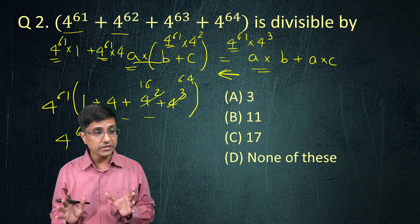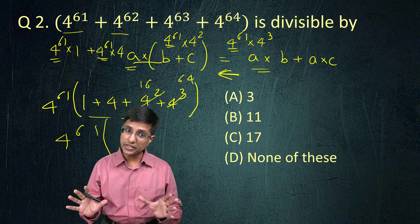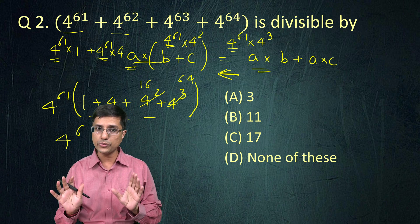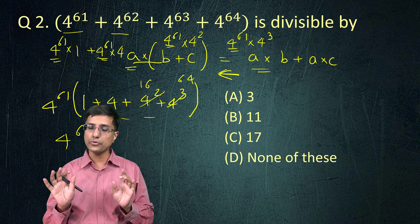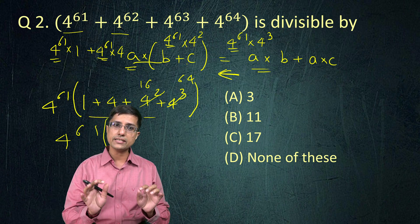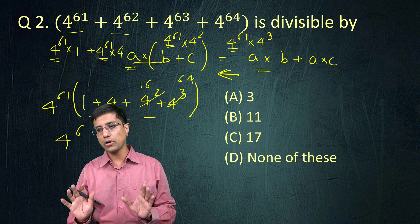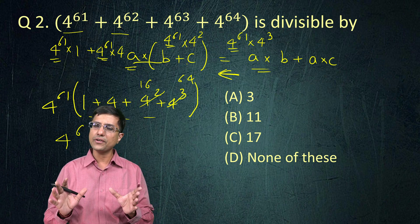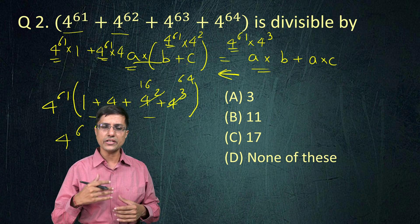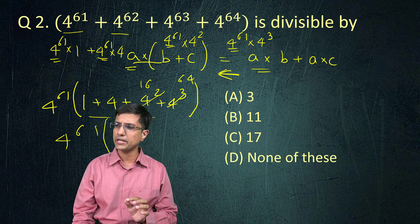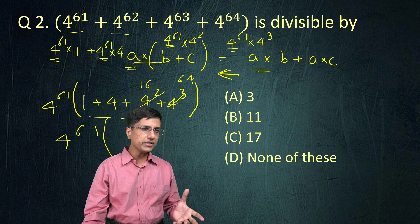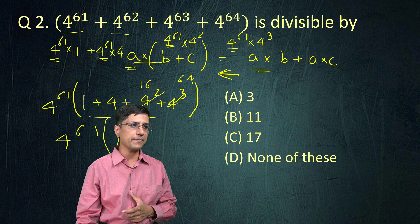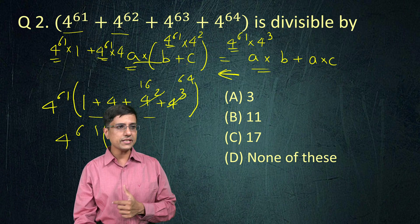Squares and cubes — it is very important, vital, because these exams don't give you that much time. Now if I total all of these: 64 plus 4 is very simple. 16 plus 4 becomes 20. 64 plus 1 is 65. 65 plus 20 is 85. So we can directly arrive at the answer: this becomes 4 raised to power 61 into 85.